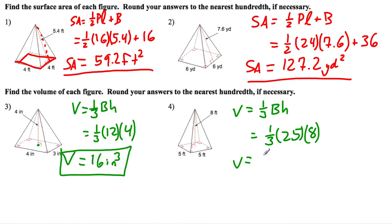So if I do one-third of that, I get that the volume is equal to 66.6 repeating, so I can round it off to 66.67 feet cubed.